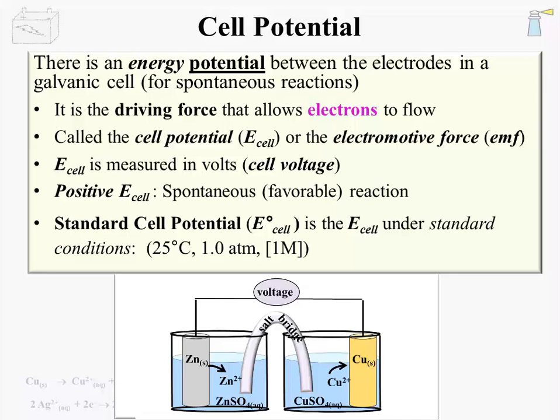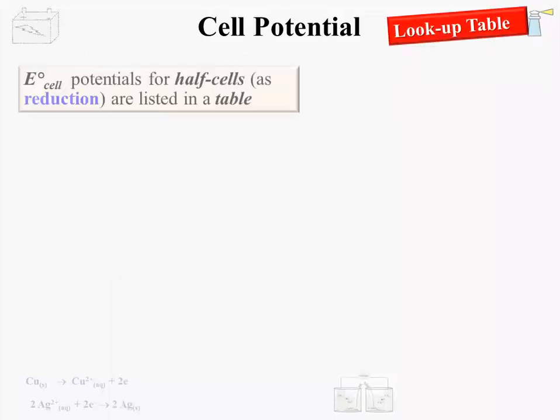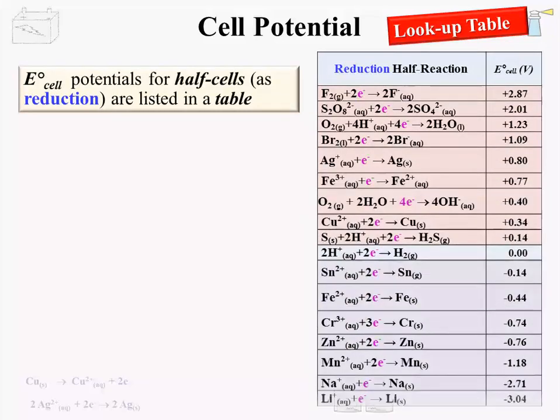But how do we find a potential for a reaction or half-reaction? One way is to measure it. Another way is to look it up in a table. EO cell potentials for half-cells or half-reactions are listed in a lookup table in the back of most chemistry textbooks. For convenience, all half-reactions in the table are written in the reduction direction — each half-reaction has electrons as reactants. That is not true for the half-reactions that are usually found as oxidation half-reactions, but once we understand how the table relates the half-reaction and the voltage, it is not really a problem.